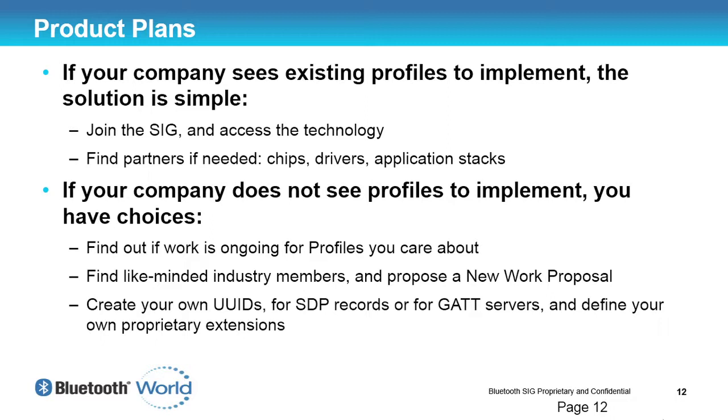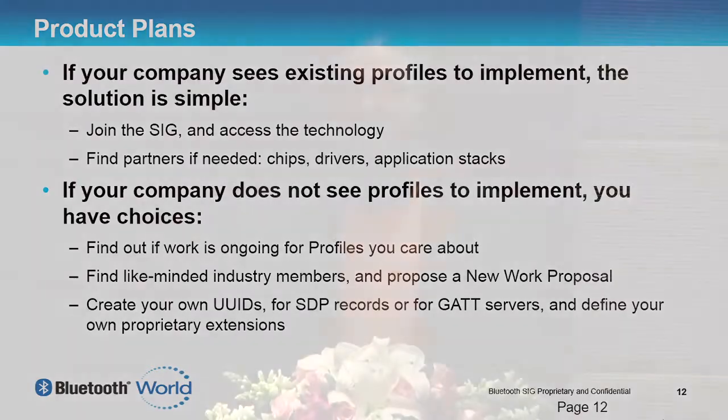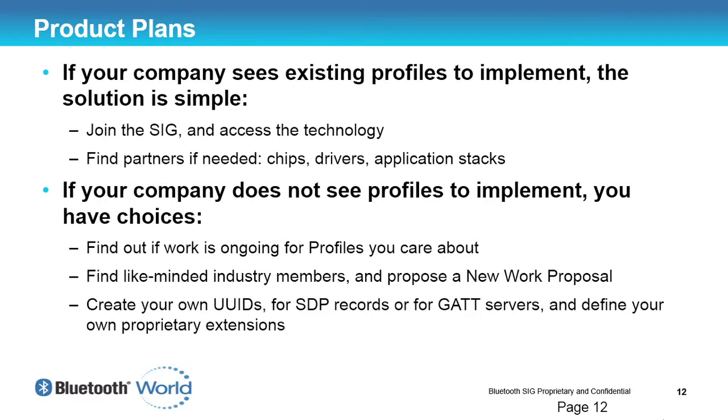Another option is to do something proprietary. For example, if you want to build a cactus water level sensor — not just a plant pot water level, but something really specific — cacti have a completely different type of soil, and normal water level detectors for normal plants don't work with cacti. If you're the only company that wants to do that, you use a 128-bit UUID, build an SDP record, or build an attribute protocol set of attributes for your device, and define your own proprietary extensions. You may use existing characteristics, but you can also do something completely proprietary — and that's perfectly allowed.